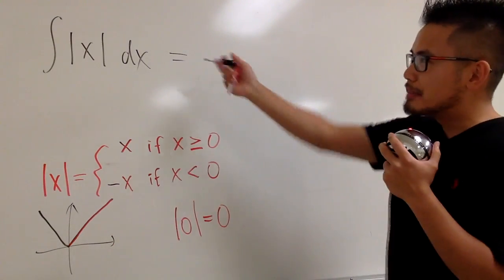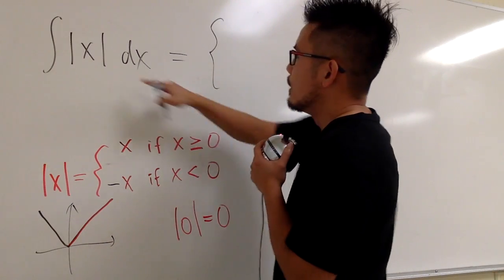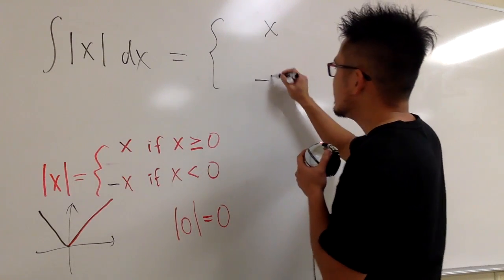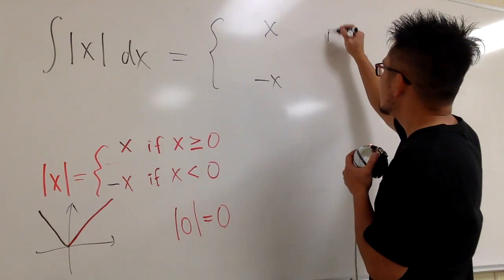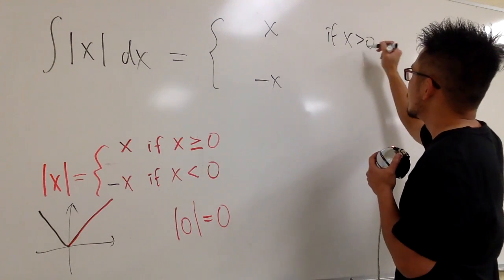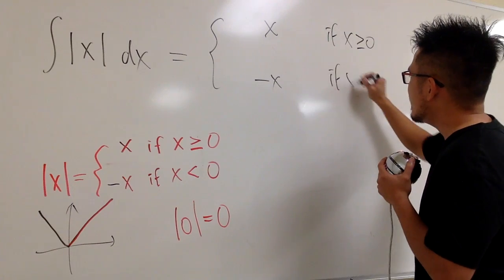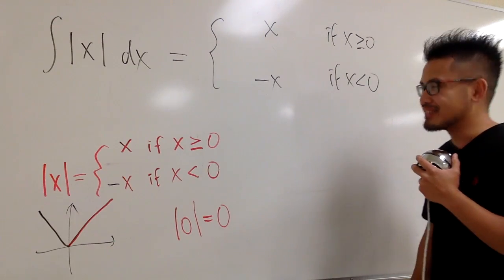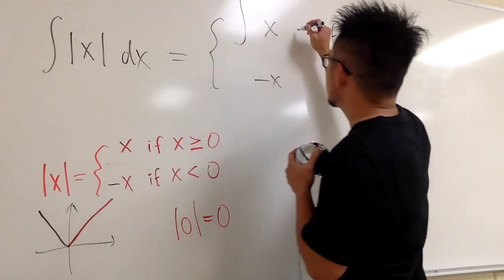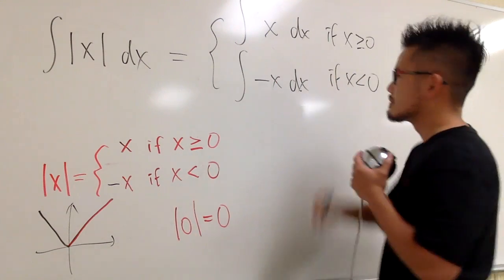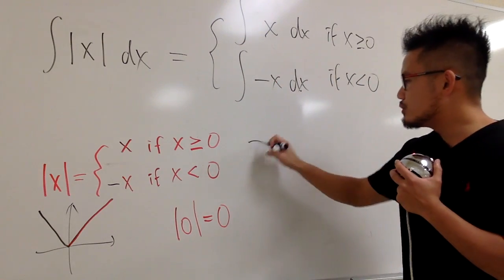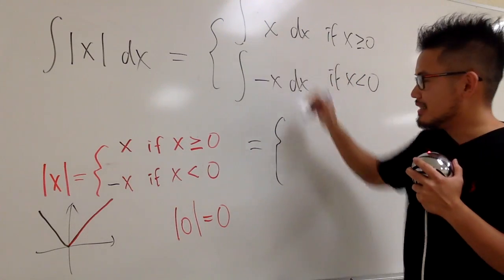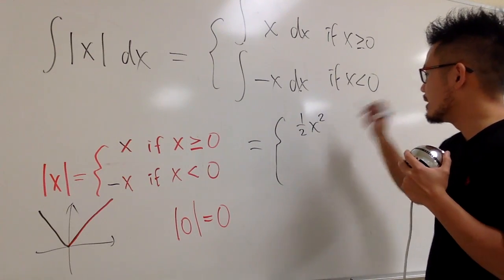This is how we're going to integrate absolute value of x. Based on the piecewise definition, we integrate x when x is greater than or equal to zero, and we integrate negative x when x is less than zero. Don't put the equal sign on both pieces, just one is good enough. Then we integrate x and integrate negative x, and at the end we write the result with two pieces. The antiderivative of x is one-half x squared plus C.